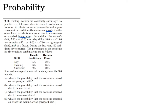In addition, the workers' shifts — 7 a.m. to 3 p.m. (day shift), 3 p.m. to 11 p.m. (evening shift), or 11 p.m. to 7 a.m. (graveyard shift) — may also be a factor. The time shifts are divided into three. During the last year, 300 accidents have occurred. The percentage of accidents for the condition combinations are listed here, including shifts, unsafe conditions, and human error.